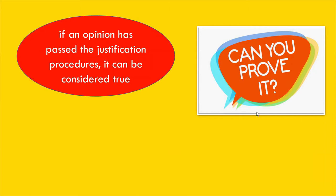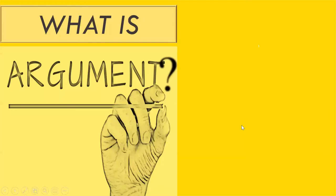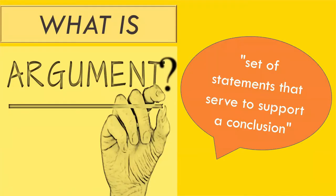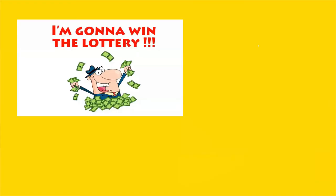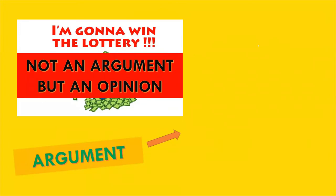Before something can be considered true, it must go through justification procedures. Therefore, if an opinion has passed the justification procedures, it can be considered true. If a person wishes to demonstrate that his argument is more than just an opinion but rather something true, he must prove his argument. An argument is defined as a set of statements that serve to support a conclusion.